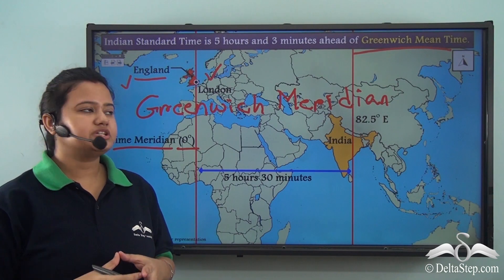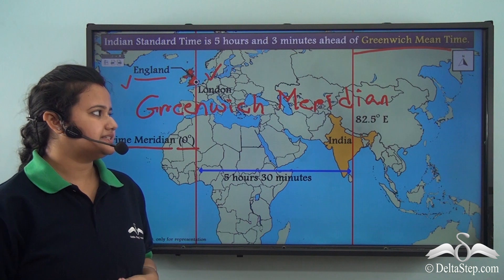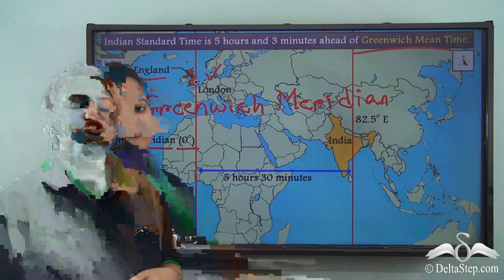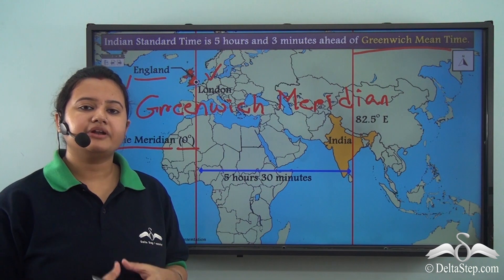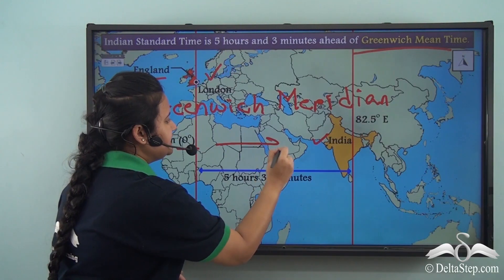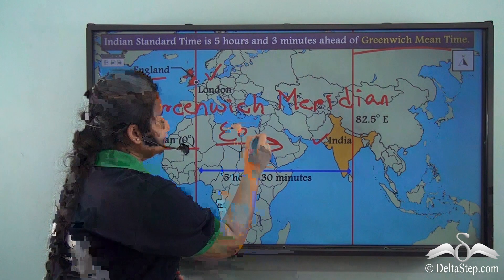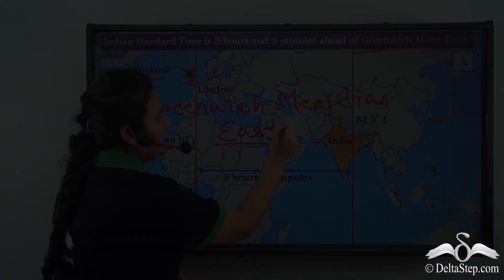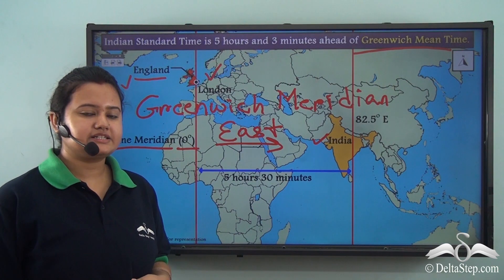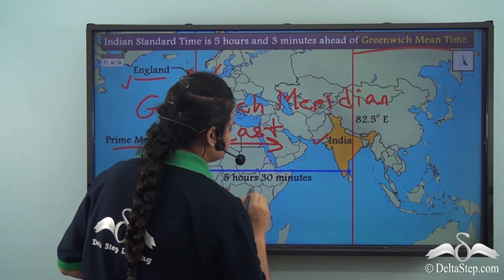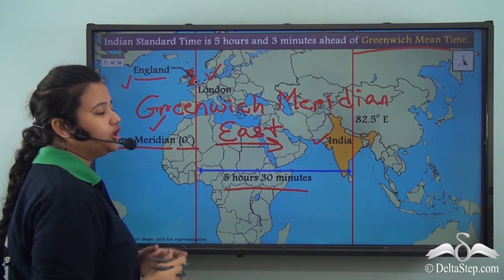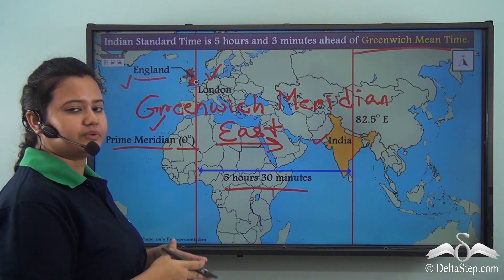It is to be noted that 82.5 degrees east, the standard meridian of India, is to the east of the prime meridian. IST — Indian Standard Time — is 5 hours and 30 minutes ahead of GMT, Greenwich Mean Time.